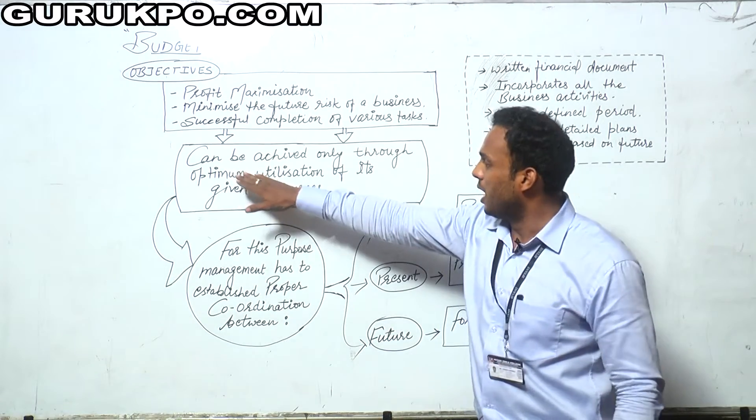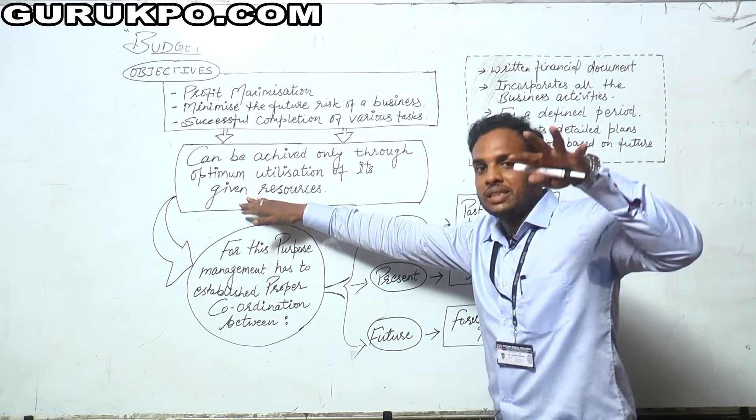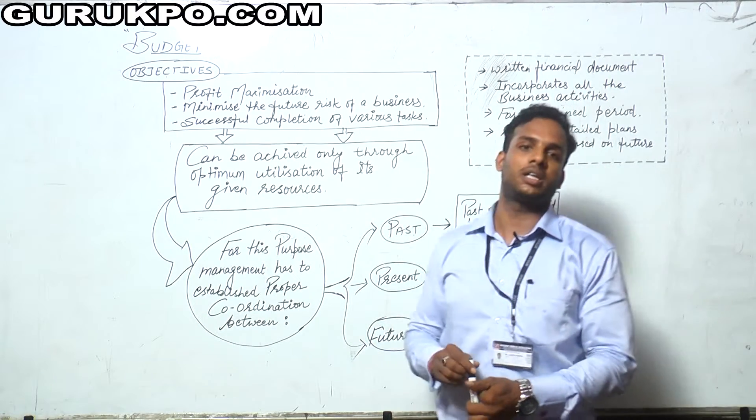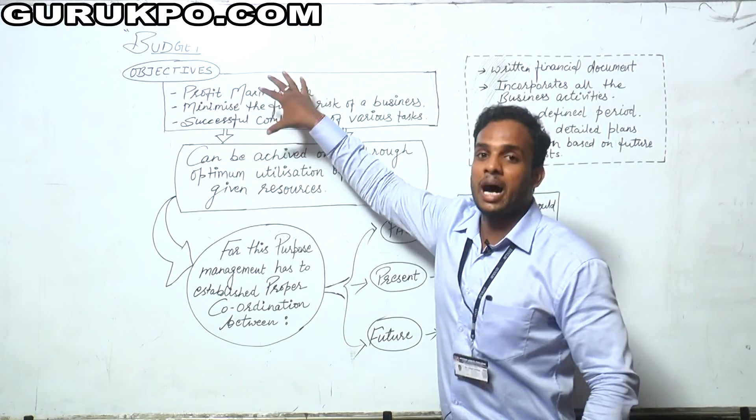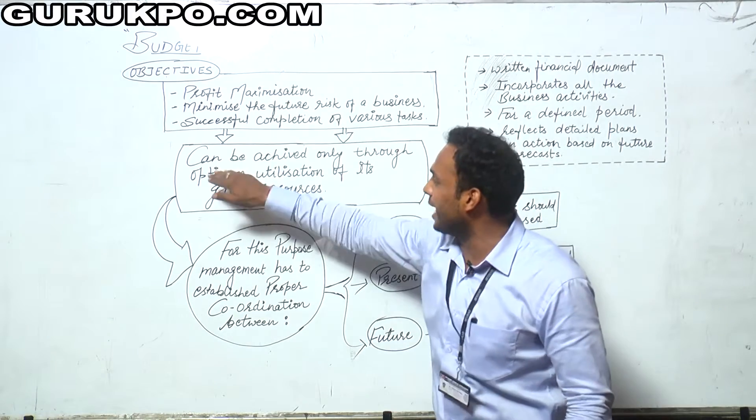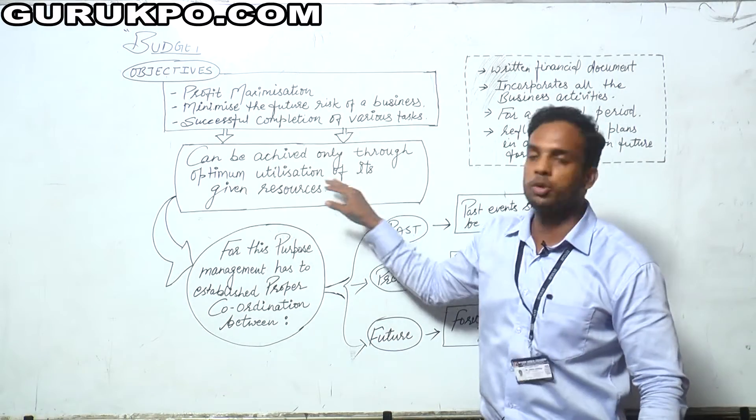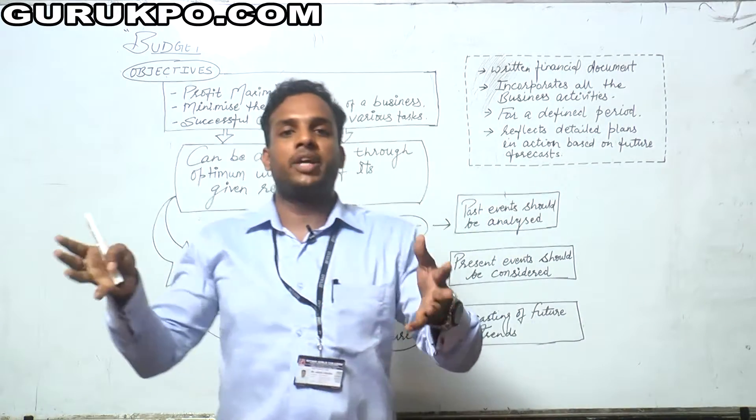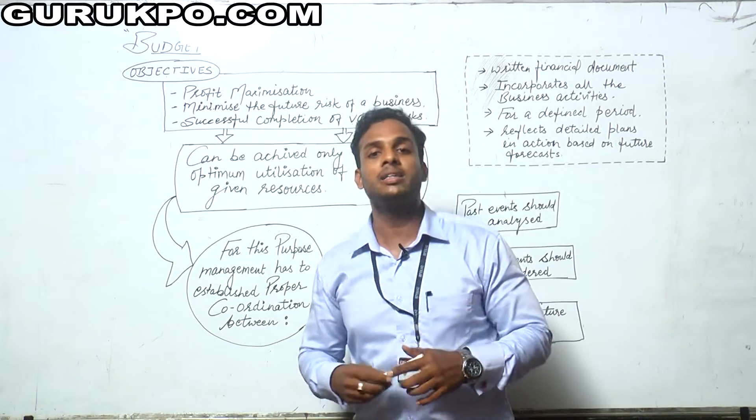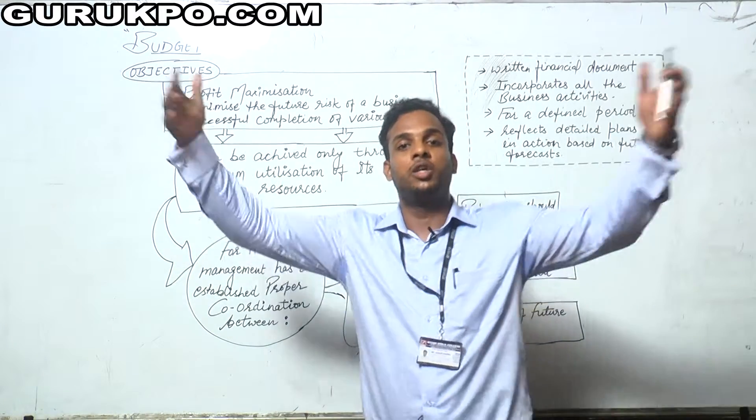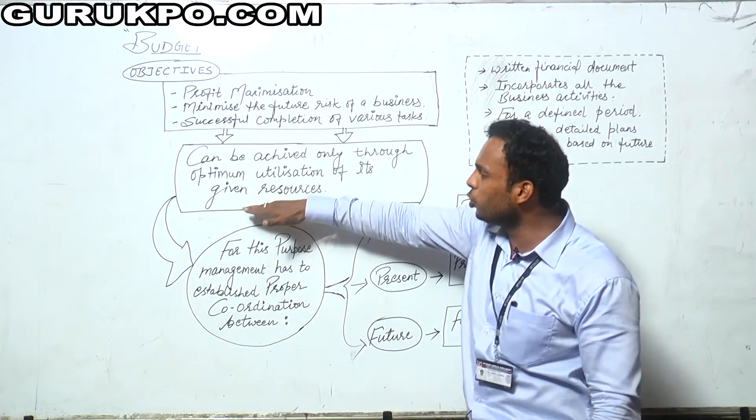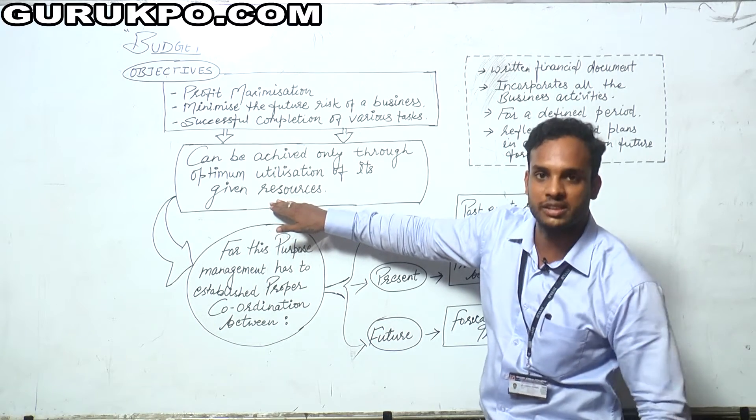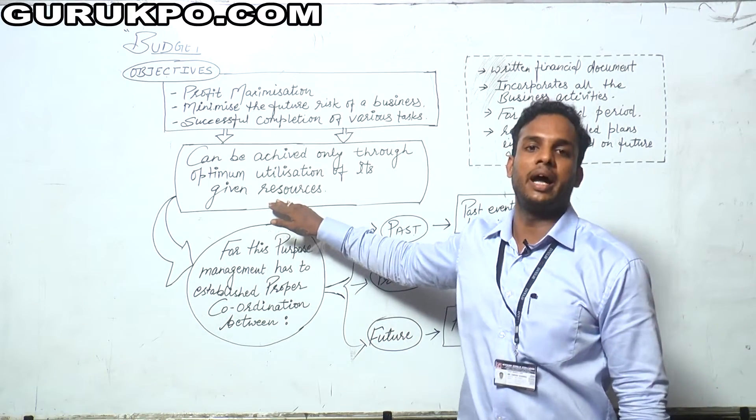To achieve these objectives, the company needs to do optimum utilization of the resources it has. All the above written objectives can be achieved only through optimum utilization of its given resources, because resources are very scarce but needs are very huge. So how to utilize your given resources is important and basic to a business concern activity.